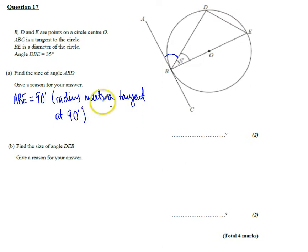So that's easy to work out then. So that's our reason, but then we've just got to do 90 minus 35, which is 55 degrees. So 55 degrees, and the reason is because this tangent meets this radius at 90.